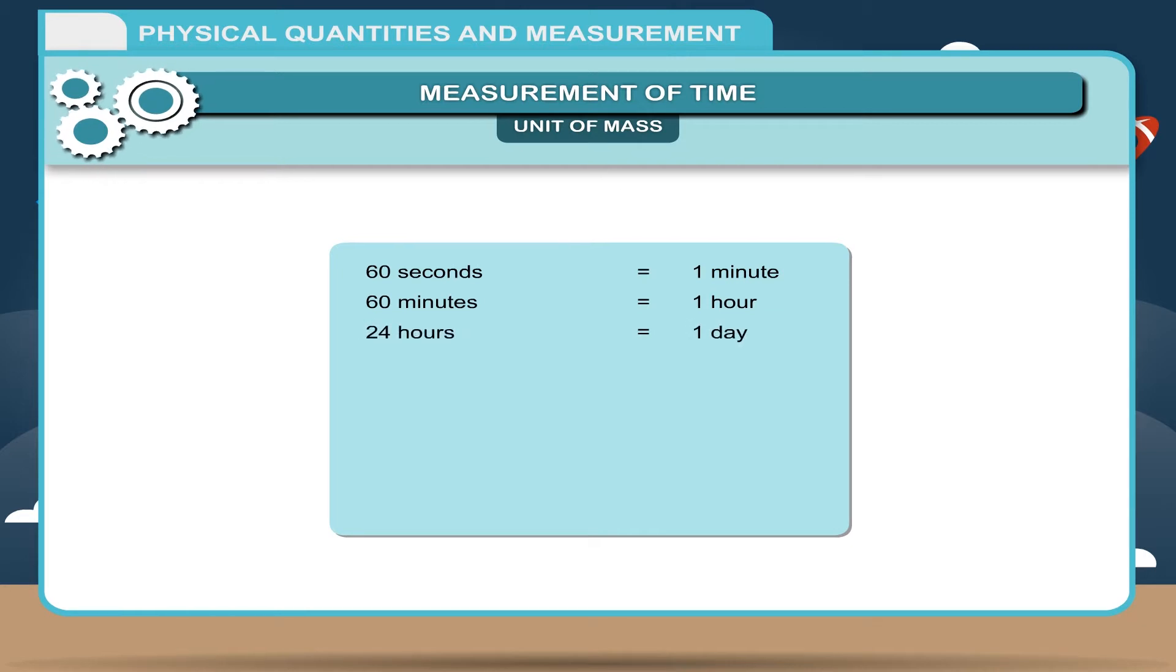Relationship between different units of time. 60 seconds equals 1 minute. 60 minutes equals 1 hour. 24 hours equals 1 day. 365 days approximately equals 1 year. 10 years equals 1 decade. 10 decades equals 1 century equals 100 years. 10 centuries equals 1 millennium equals 1,000 years.